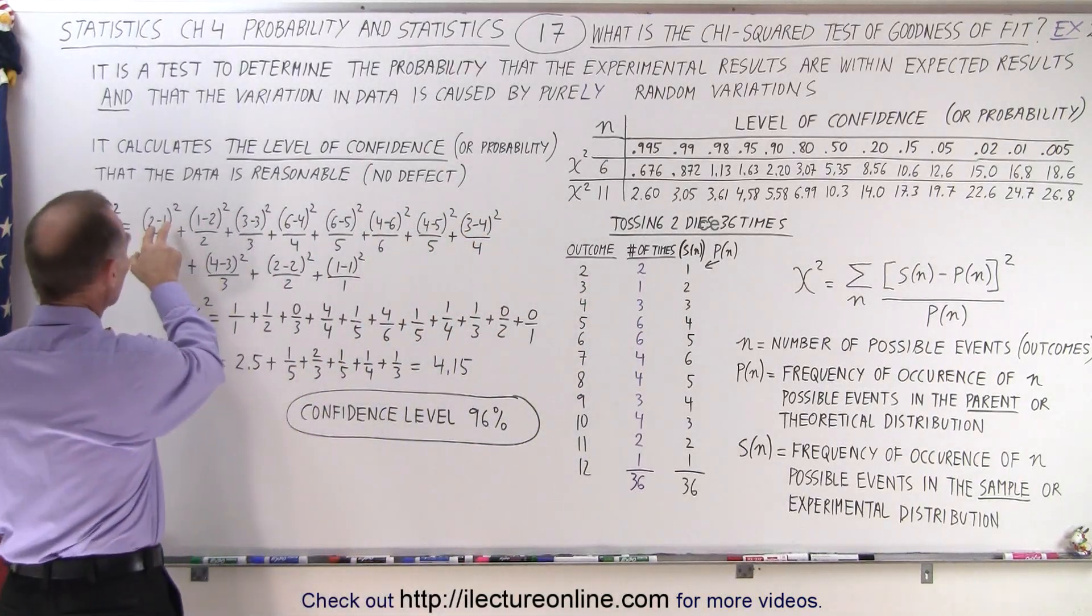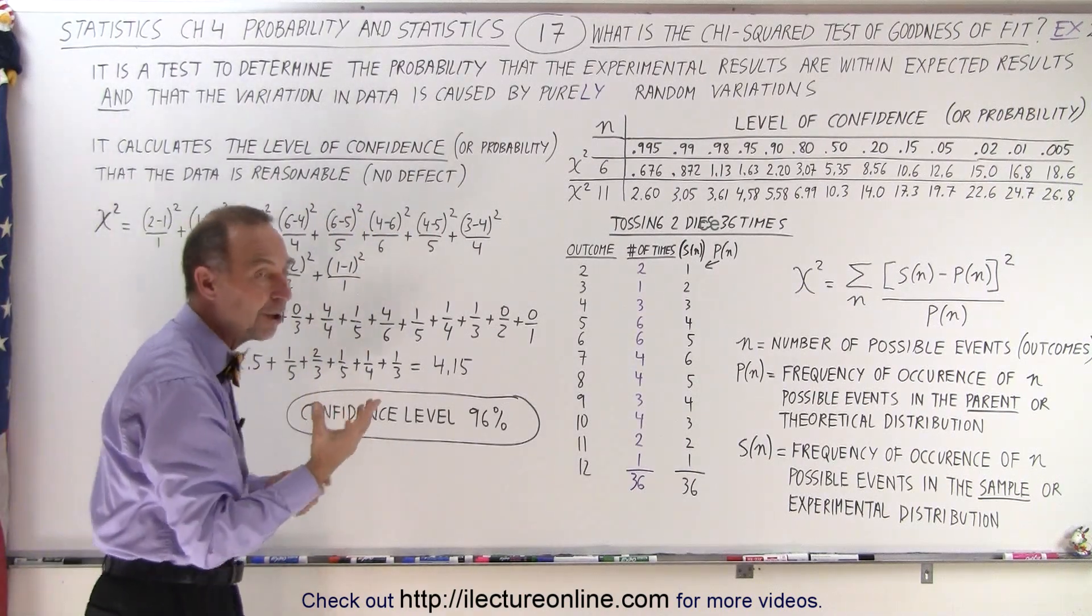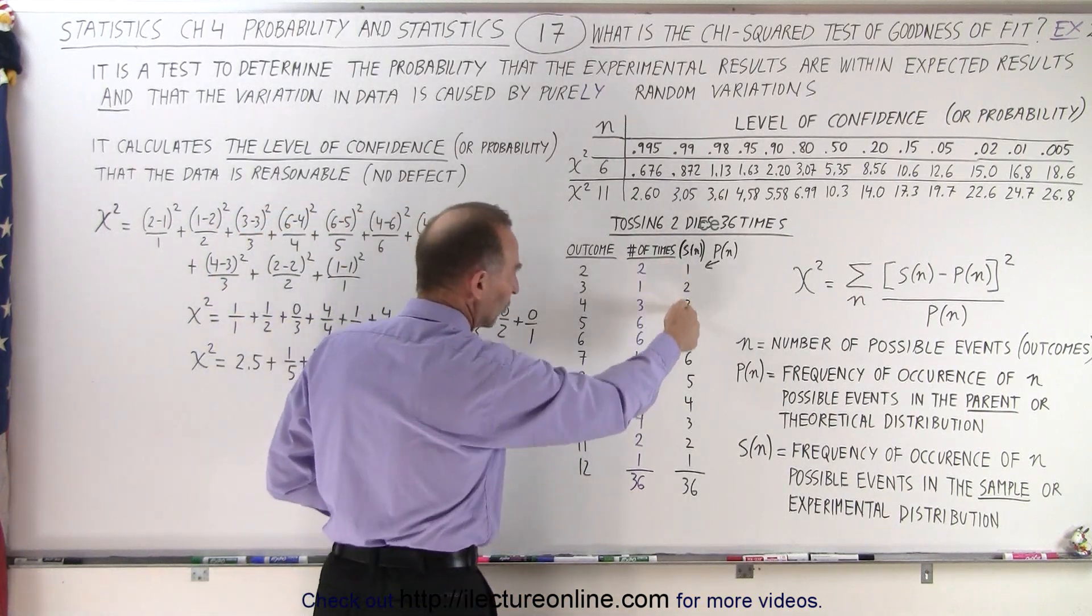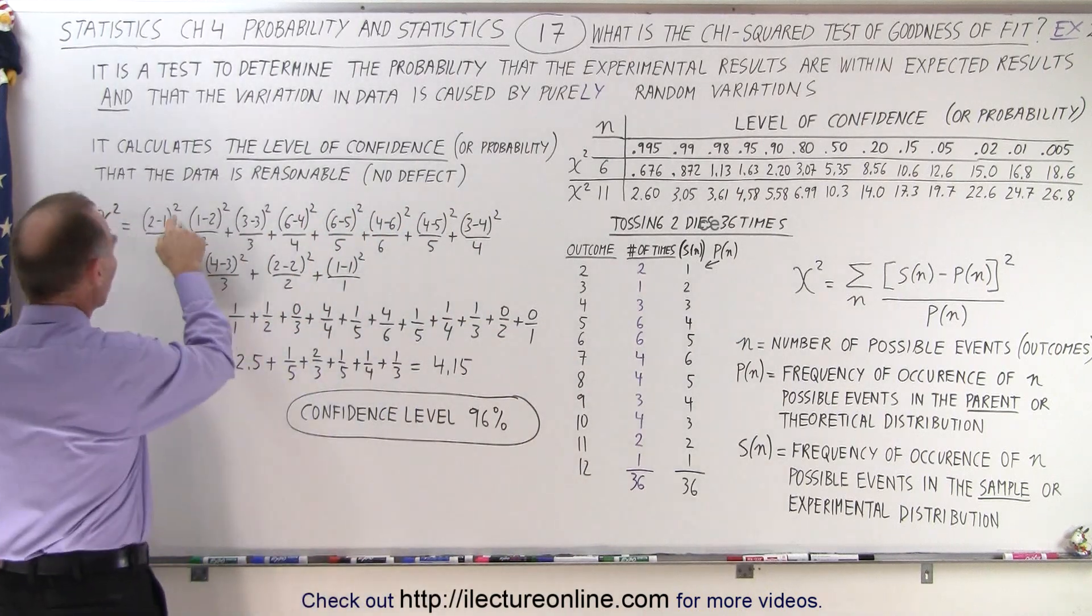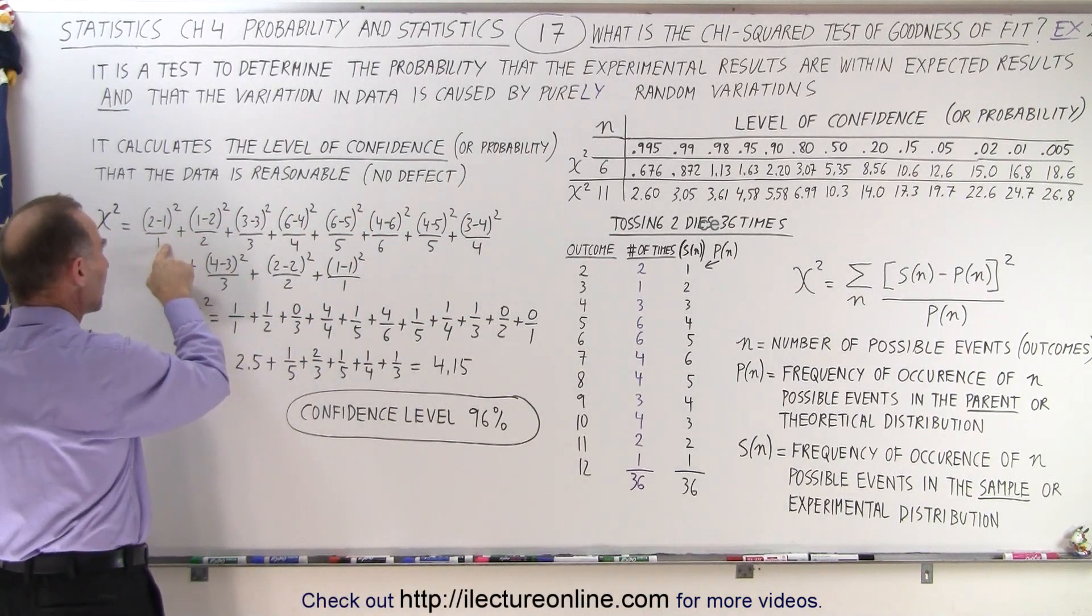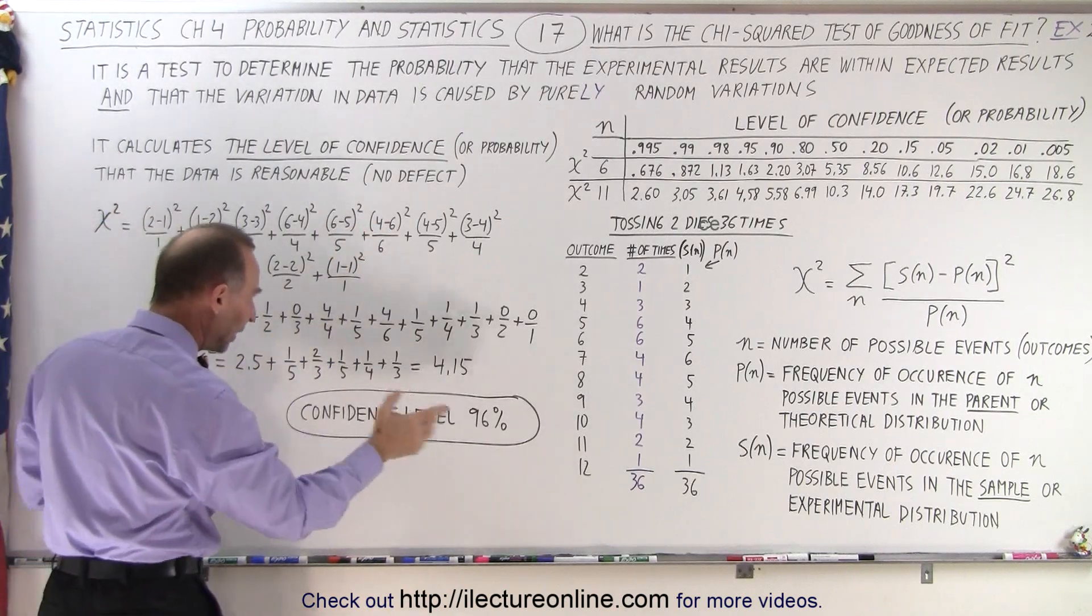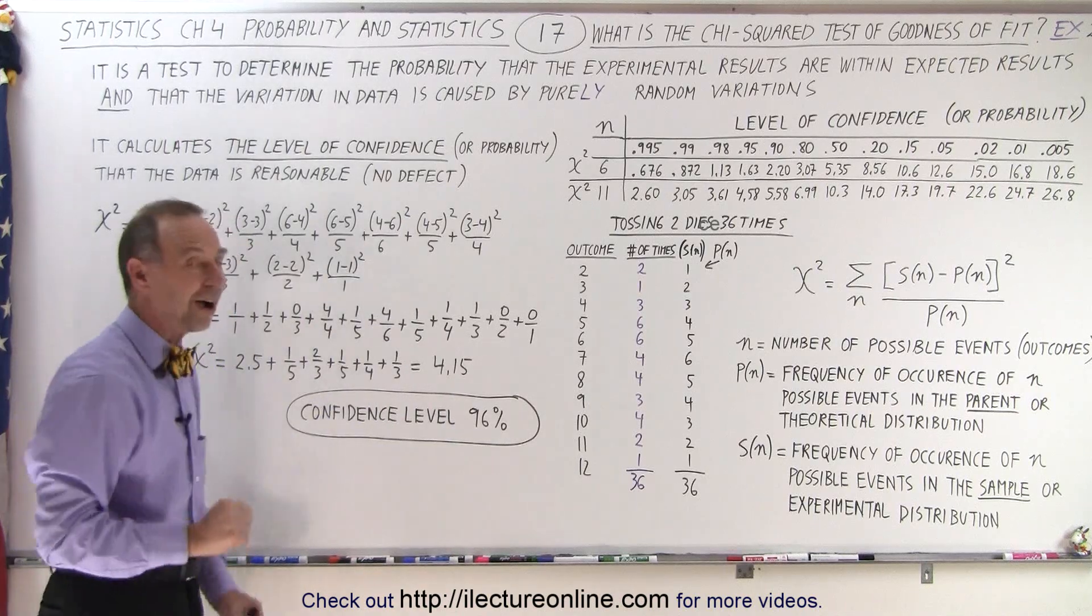So, we take the difference between those numbers, we square them, and we divide them by the probability of getting that particular outcome. So, here you can see these are the numbers that will then go into the denominator for each delta, and then we square the numerator, we divide by the probability of getting that particular outcome, we add them all up, and we end up with, after a bunch of arithmetic, we end up with 4.15.